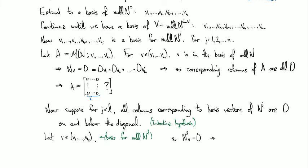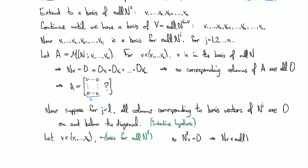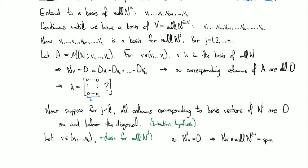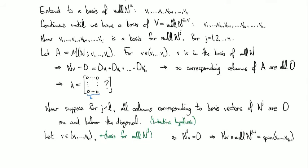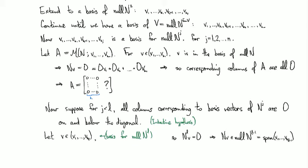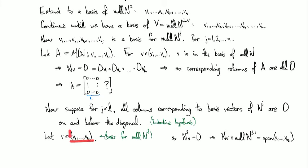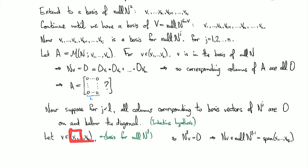And that implies that N V is in the null space of N to the L minus one. And so that's the span of V1 up through V sub K L minus one. Okay, so in other words, if V is one of these guys, then N V is in the span of some strictly smaller subset right here, because K sub L minus one comes before K sub L.